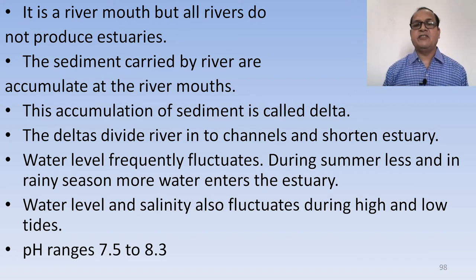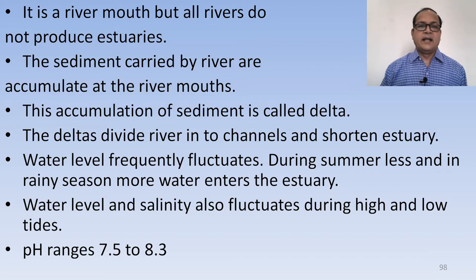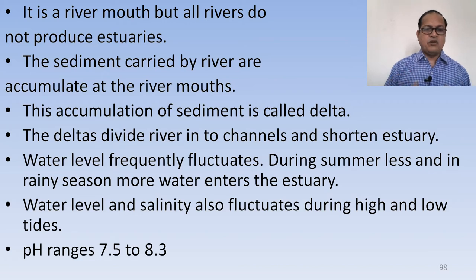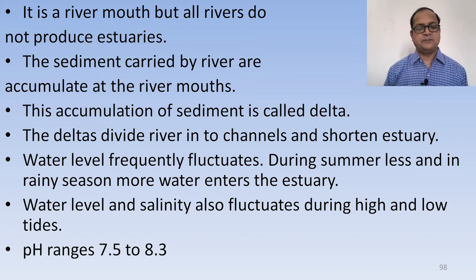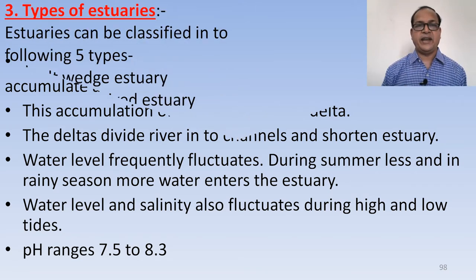River level frequently fluctuates — less during summer and higher during the rainy season, so more water enters the estuary. Water level and salinity in the estuary fluctuate during high and low tides. The pH of an estuary ranges from 7.5 to 8.3.